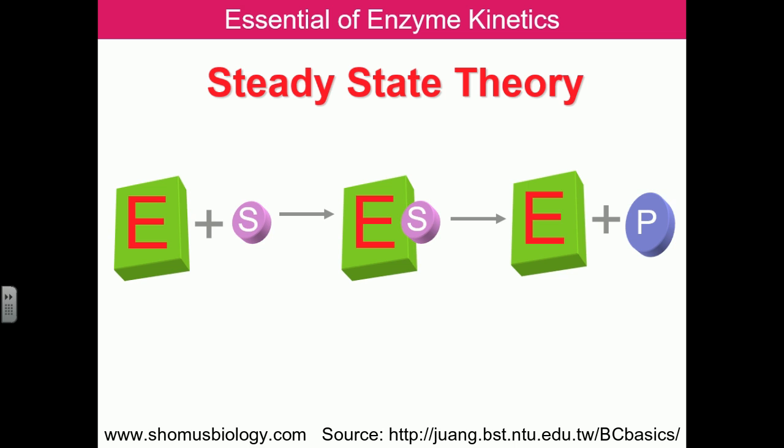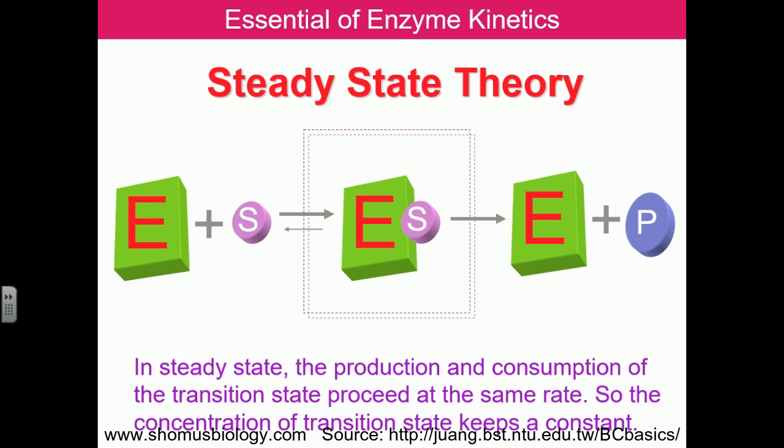The enzyme tries to maintain the enzyme-substrate complex in a balanced situation while it is actively catalyzing. In steady state, the production of the enzyme-substrate complex and its consumption proceed at the same rate. That is why the concentration of the transition state keeps constant — because production and removal are occurring at the same rate.